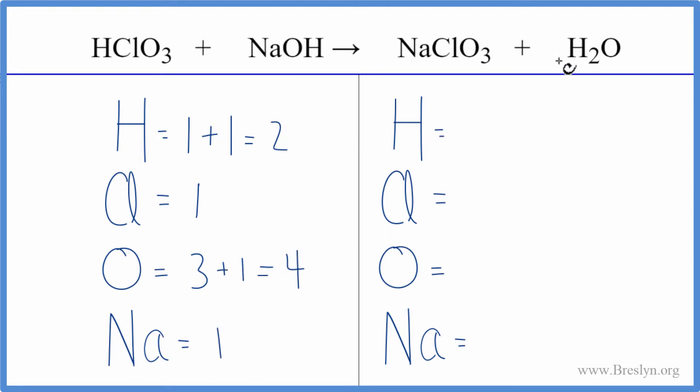On the product side, we have two hydrogens, one chlorine, we have three oxygens plus the one here. So we have four oxygens, and then the one sodium.